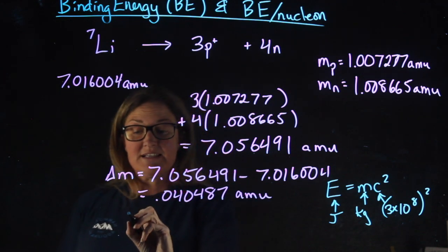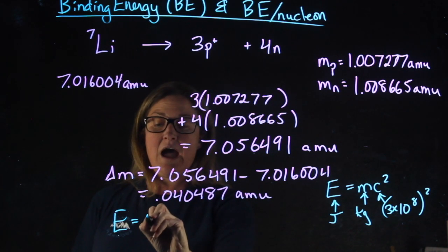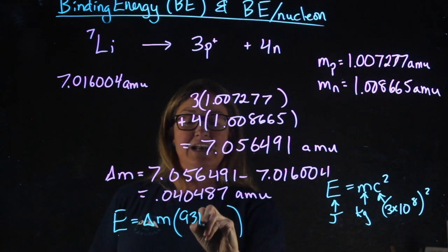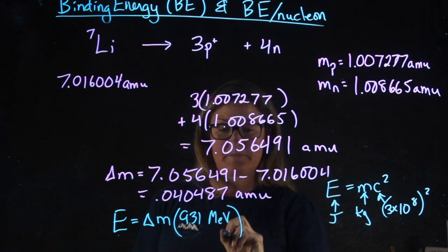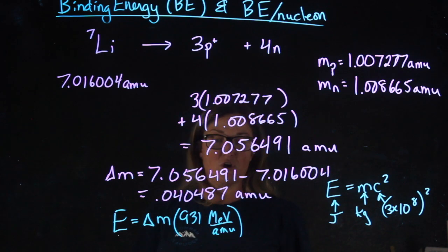I'm going to take the mass decrement, and to get the energy, I multiply that change in mass by 931 MeV per amu.